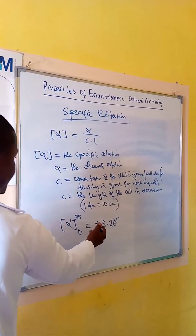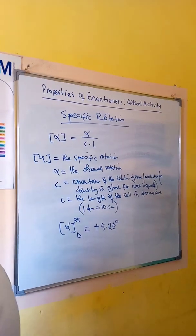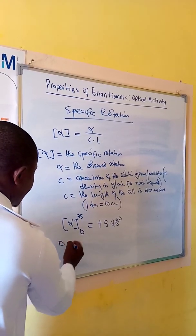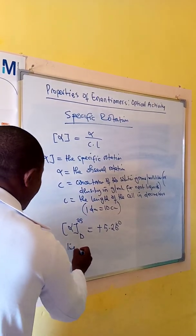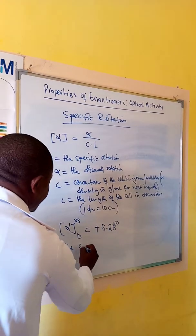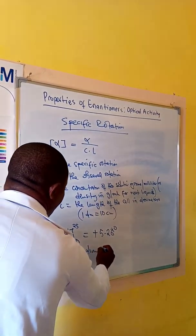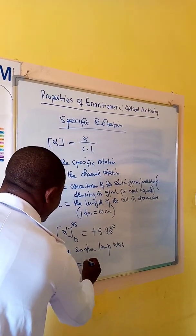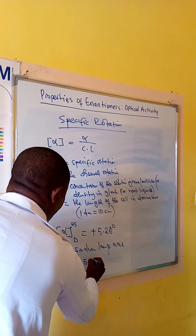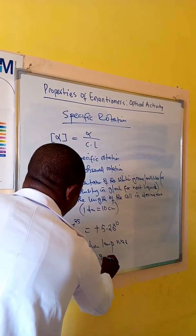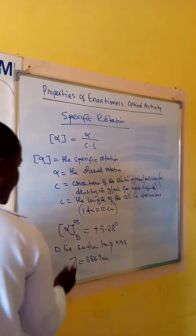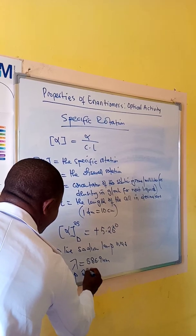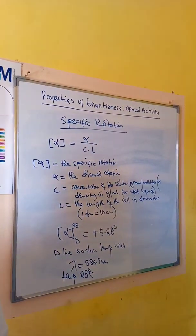For example, if specific rotation is represented as alpha 25 D equals positive 5.2 degrees, the D line means a sodium lamp was used with wavelength at 589 nanometers at a temperature of 25 degrees Celsius.